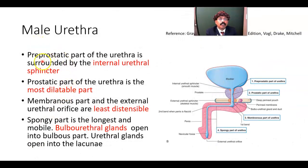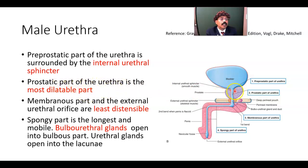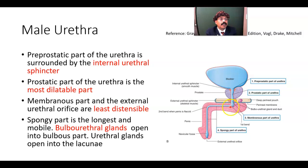The pre-prostatic part of the urethra is surrounded by the internal urethral sphincter. The prostatic part of the urethra is the most dilatable part. The membranous part passes through the deep perineal pouch and penetrates the perineal membrane, where we find the external urethral sphincter around the membranous urethra.